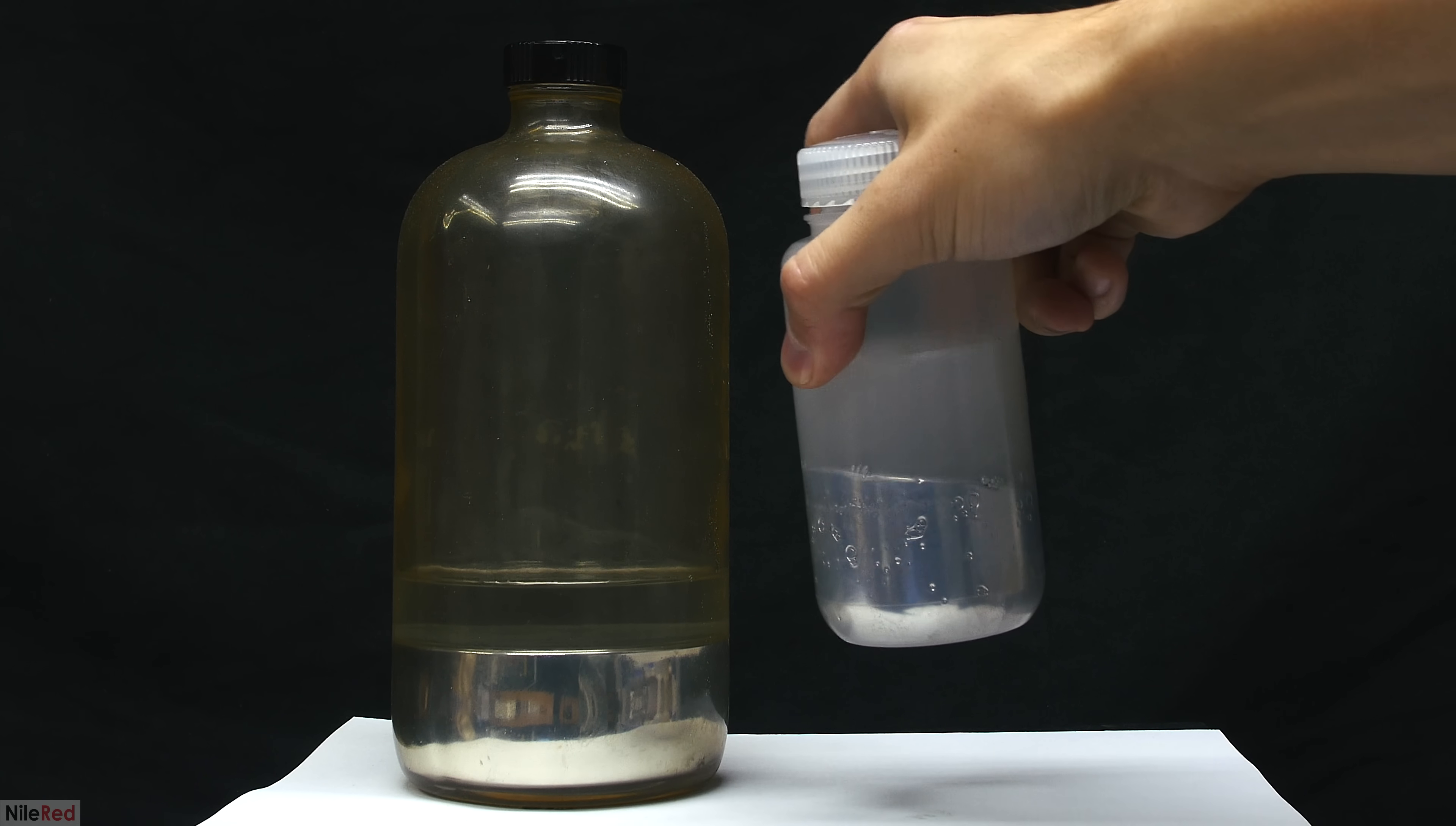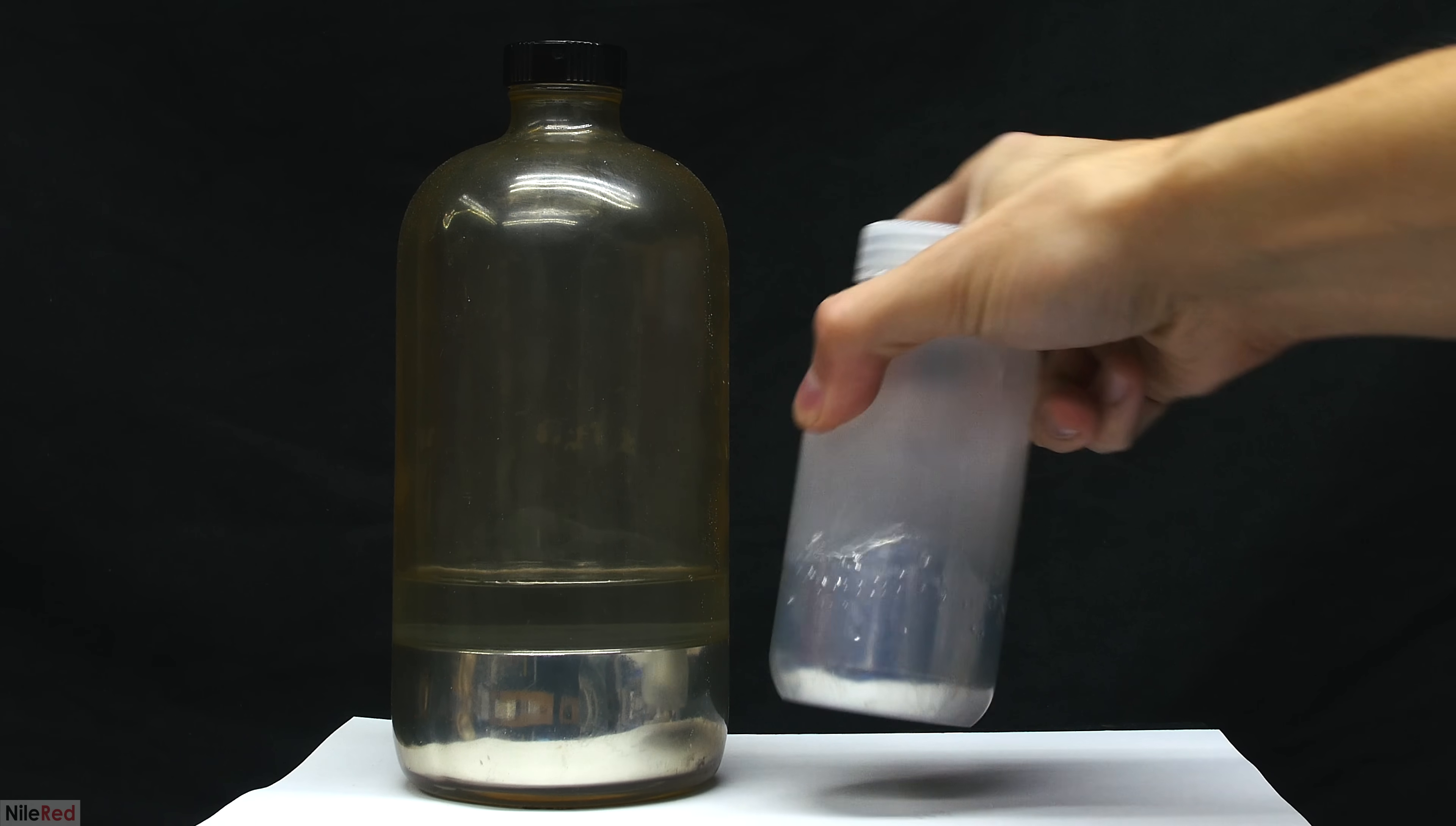If the mercury were stored without water above it, mercury vapor would fill the entire container, and when I open it, it would be released into the air. Without the water, it's also much more possible for mercury vapor to passively leak out of the container.